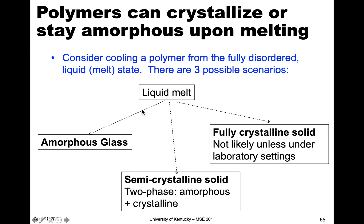We start with the liquid melt, and there are three possibilities. It can remain amorphous or become an amorphous glass. It can have some amorphous character but also have crystalline character, be two-phase — we call that semi-crystalline. And it can be fully crystalline, where everything in the material becomes crystalline.